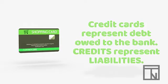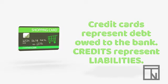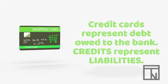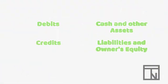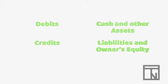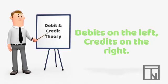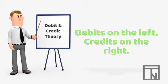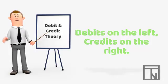The other card is my credit card. When I use my credit card, that is borrowed money from the bank that I have to pay back. So, the credit card represents my liabilities. Just looking at these two examples, debits are cash and other assets, and credits are liabilities and owner's equity. Hopefully, that example helps you remember debits and credits. Some people prefer to memorize that debits are on the left and credits are on the right, and if that works for you, that's okay too.